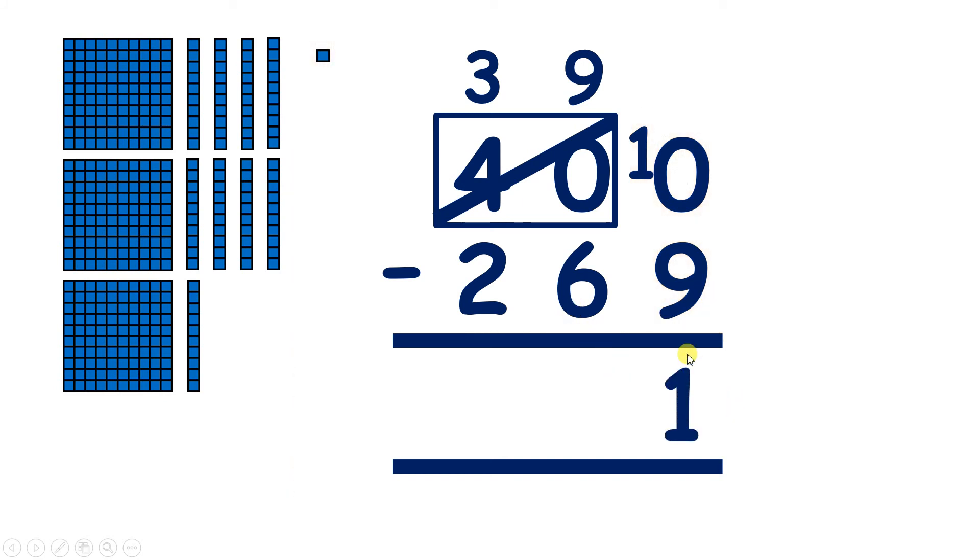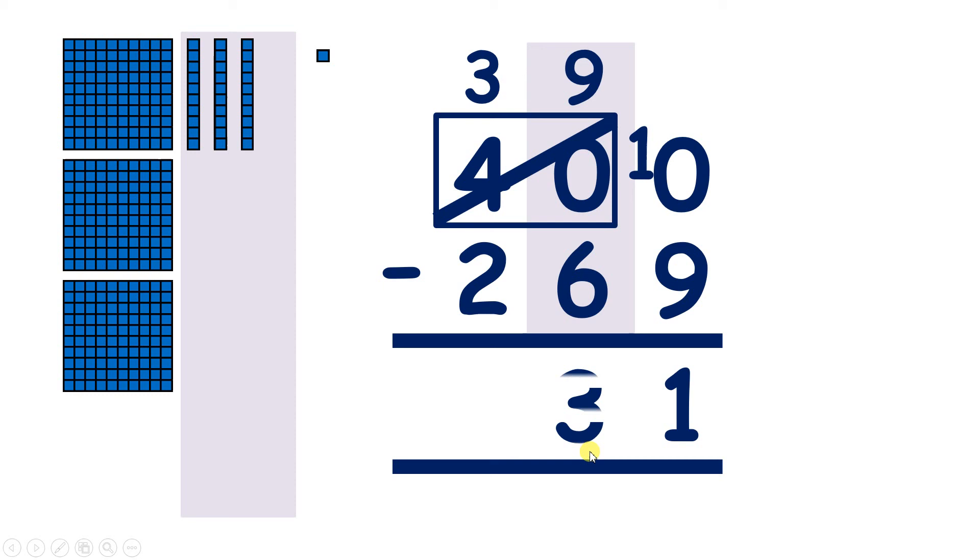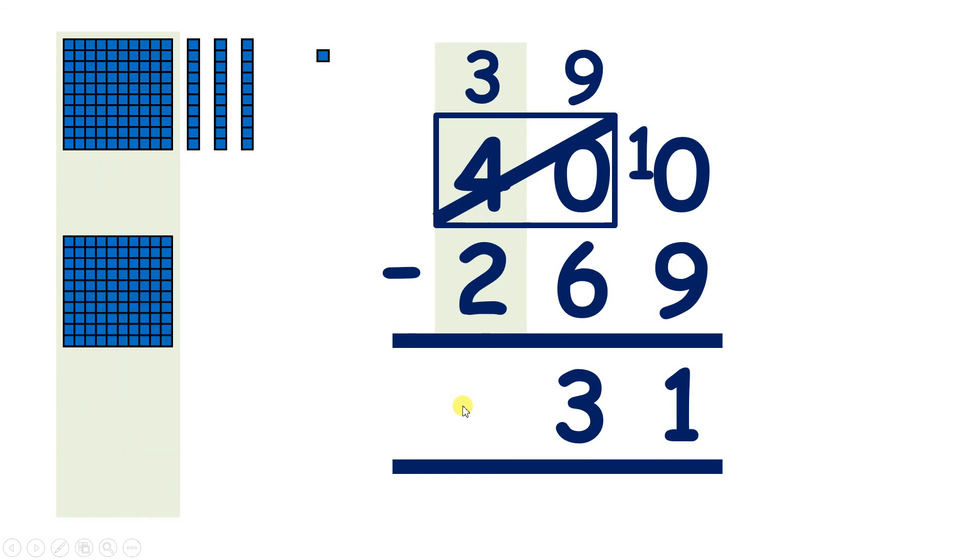Now we move along to our tens. 9 minus 6 is 3. And on to our hundreds. 3 minus 2 is 1. So our answer is 131.